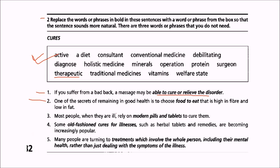Second: one of the secrets of remaining in good health is to choose food to eat that is high in fiber and low in fat. For 'food to eat', the suitable replacement is 'diet' — a diet would be good.